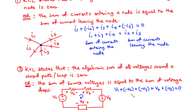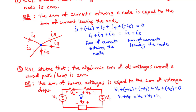Let's rearrange the terms by transposing all negatives to the right-hand side. We have v1 plus v4 equal to v2 plus v3 plus v5.